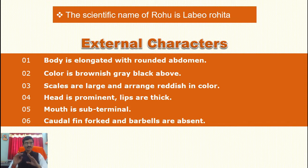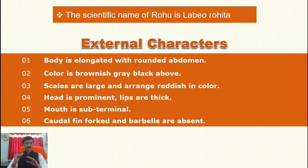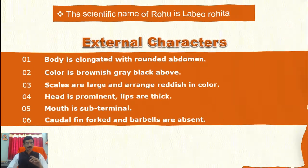If the fish belongs to the upturned mouth, then it is a surface feeder. Subterminal mouth means column feeder. If the mouth is terminal, then the fish is a bottom feeder. Labeo rohita has a subterminal mouth, meaning it is a column feeder. Three levels in the water: surface, column, and bottom. The caudal fin is forked and barbels are absent.